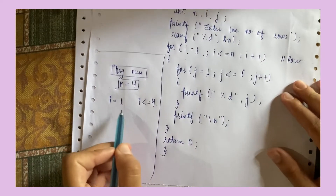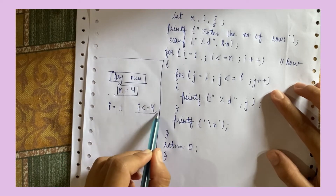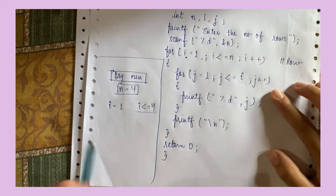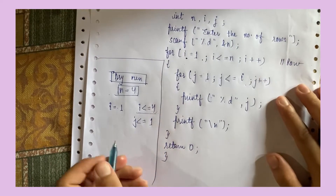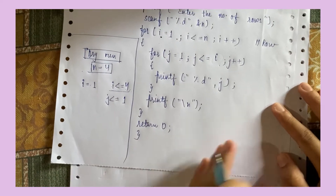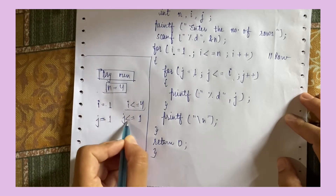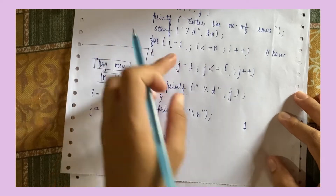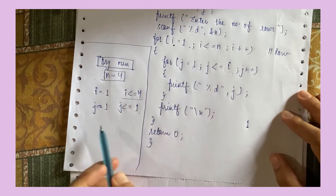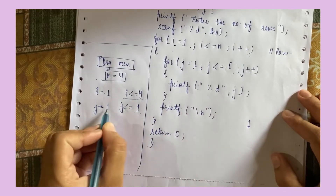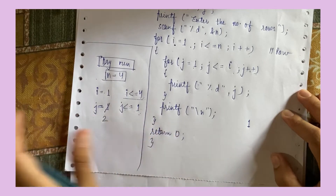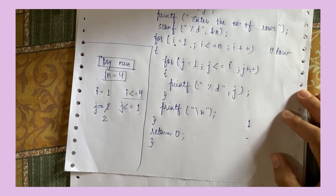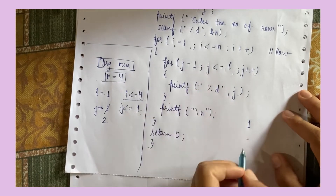This is the true condition of the outer loop — 1 less than or equal to 4. Now we will get inside. J is 1, and J will run till I, that means J will be less than or equal to 1 in this case. Value of J is 1 and 1 is less than or equal to 1 — condition true — so we will print 1. Then J will be incremented to 2. 2 less than or equal to 1 — condition false. It will come out of the loop and the cursor will go to the next line because we use backslash N.